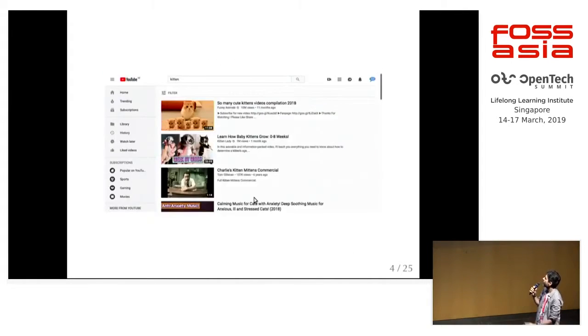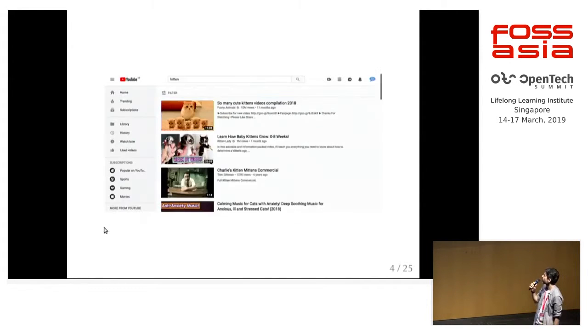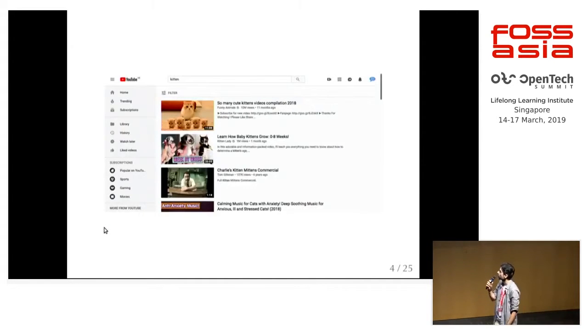So this is the mainstream. We can type in things like 'YT kitten', and it brings us to the YouTube results page for kittens.